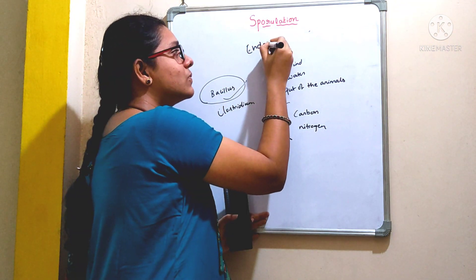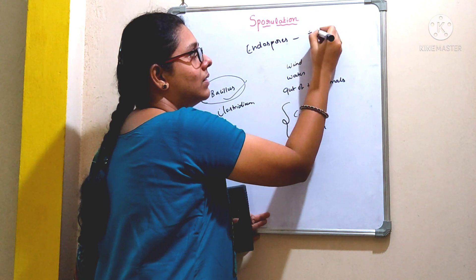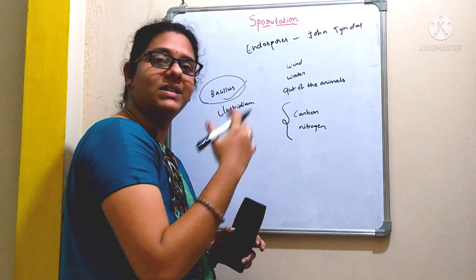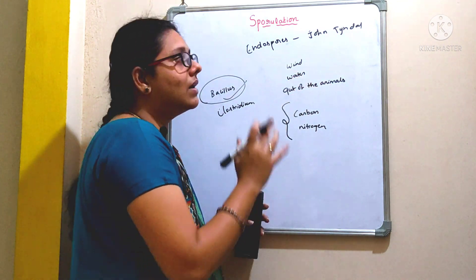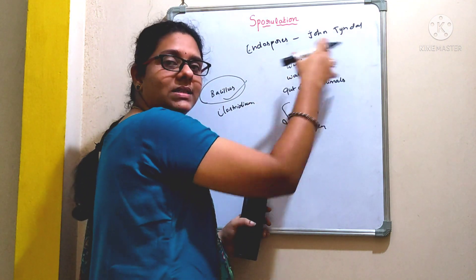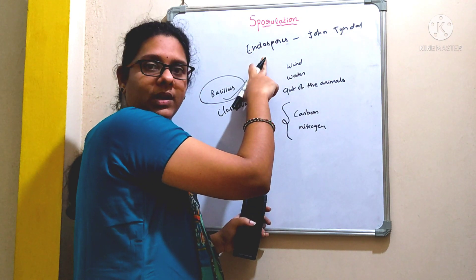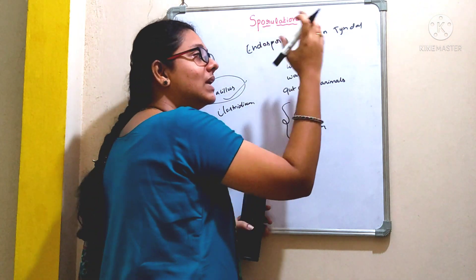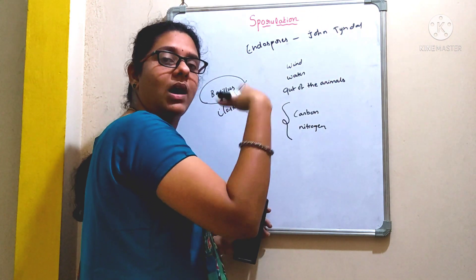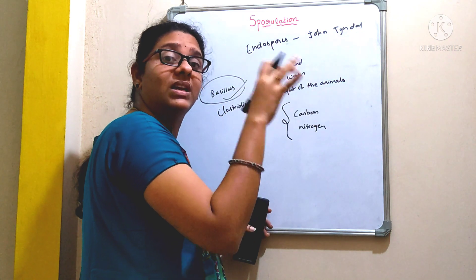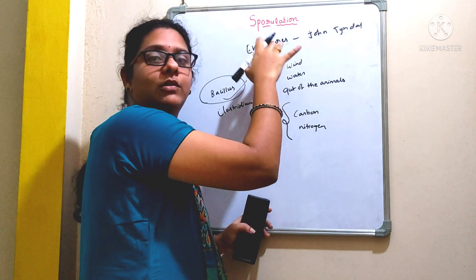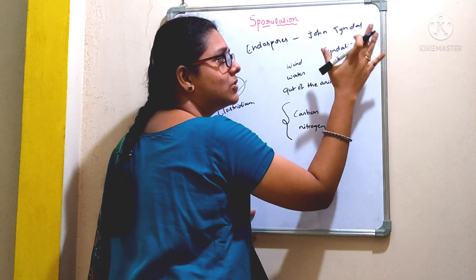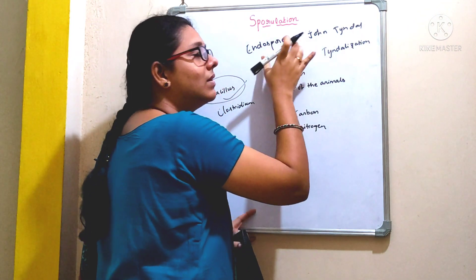These endospores were first discovered by John Tyndall. You may have heard about the Tyndallization process, which we'll discuss when we talk about sterilization techniques. John Tyndall developed a method to kill these spores. Because these spores are highly resistant to heat and desiccation, Tyndallization is a process where we apply a temperature for three consecutive days, thereby killing those spores. It is a cost-effective method used especially to kill these spores.